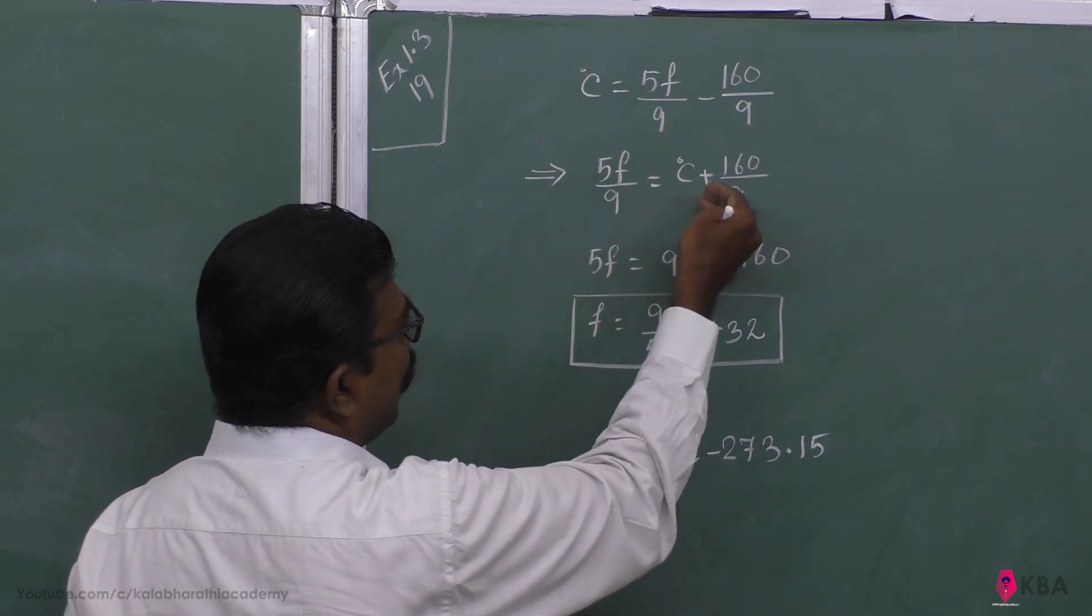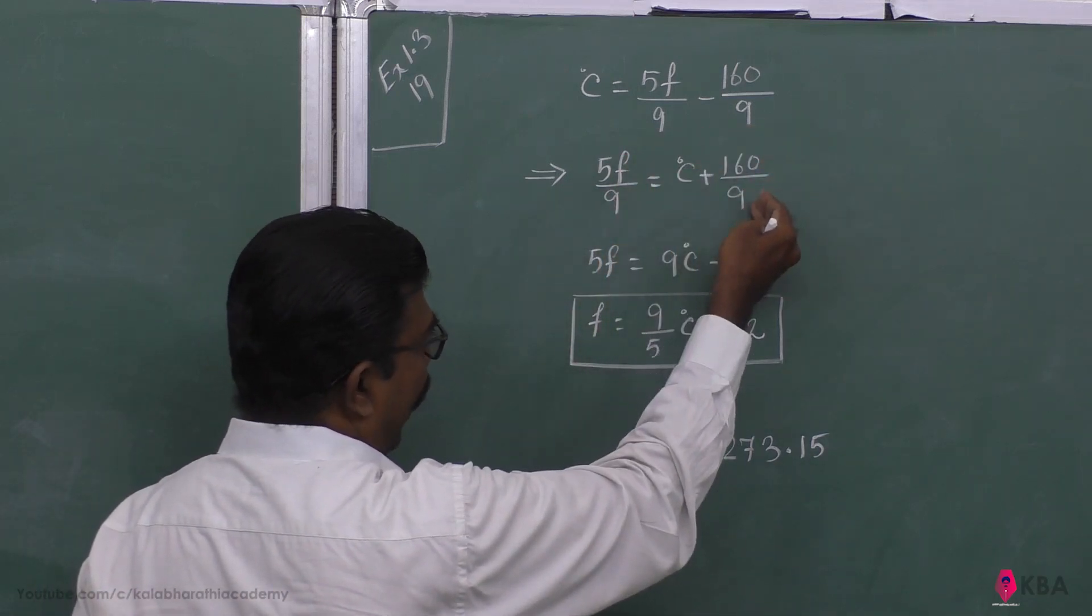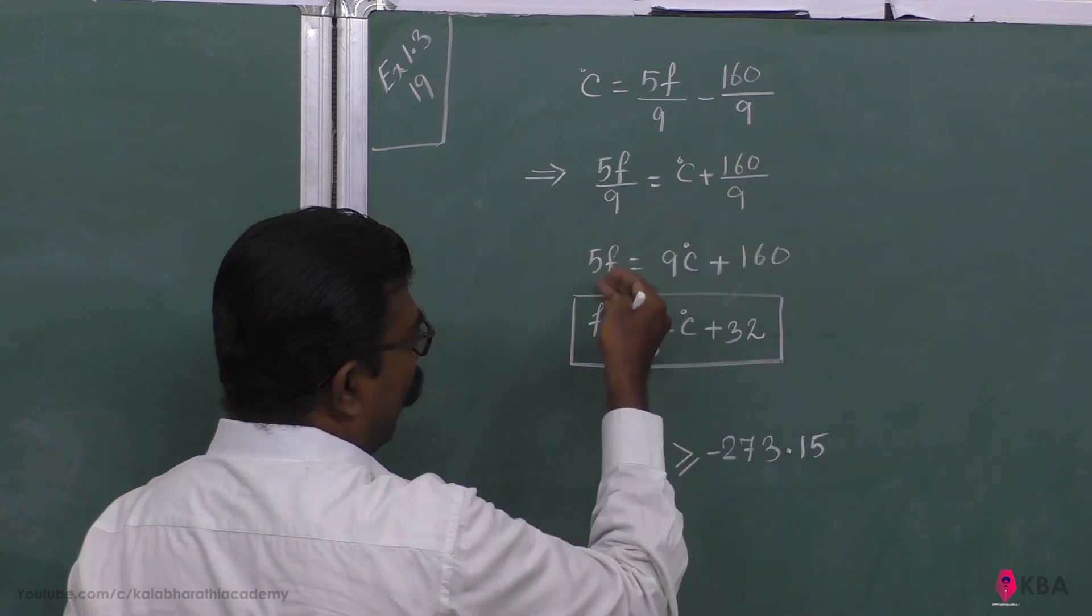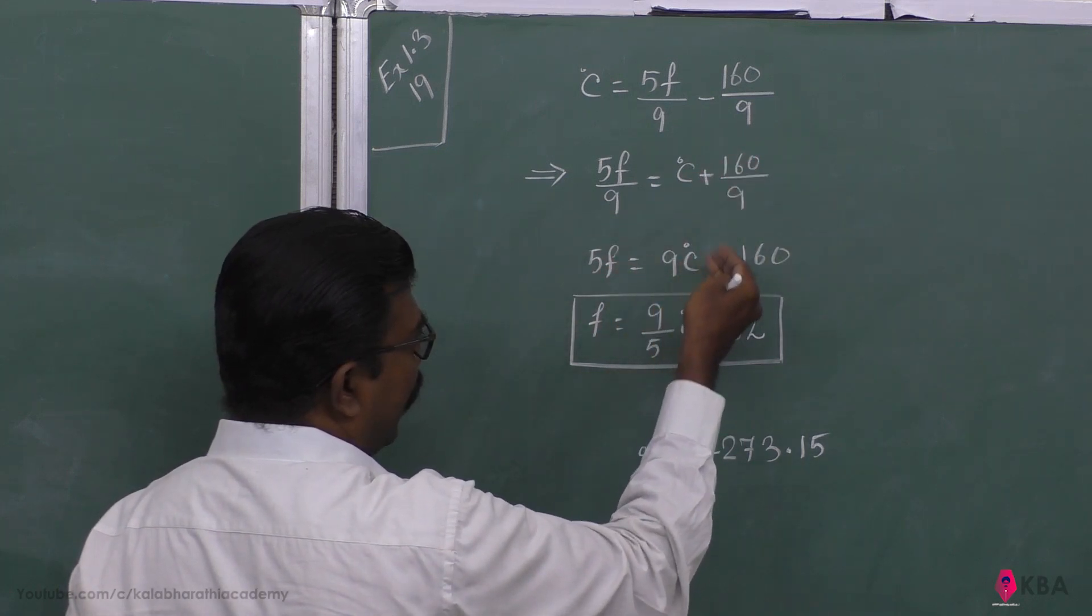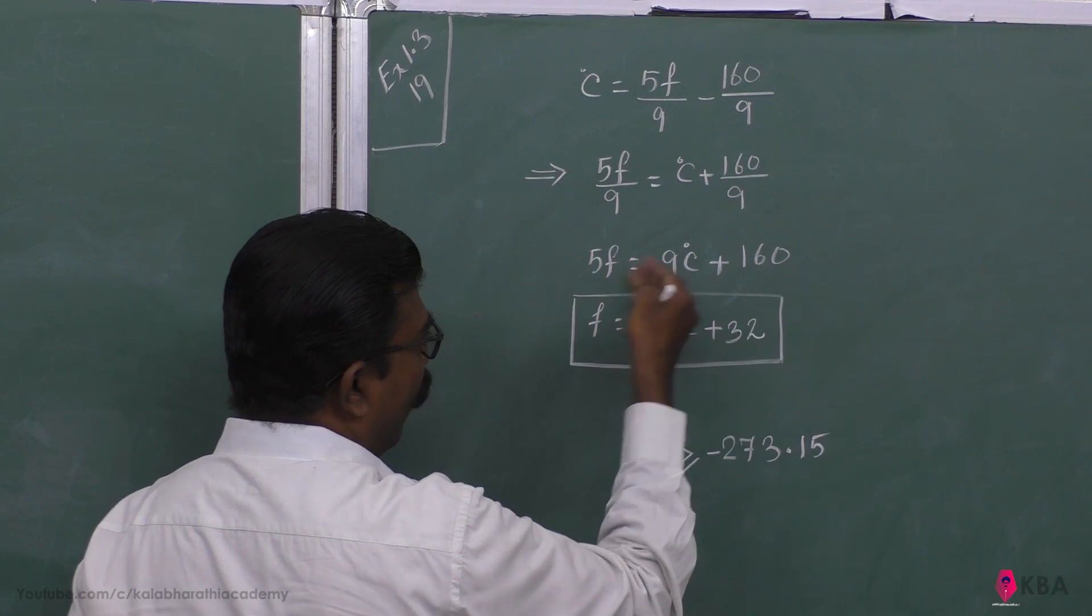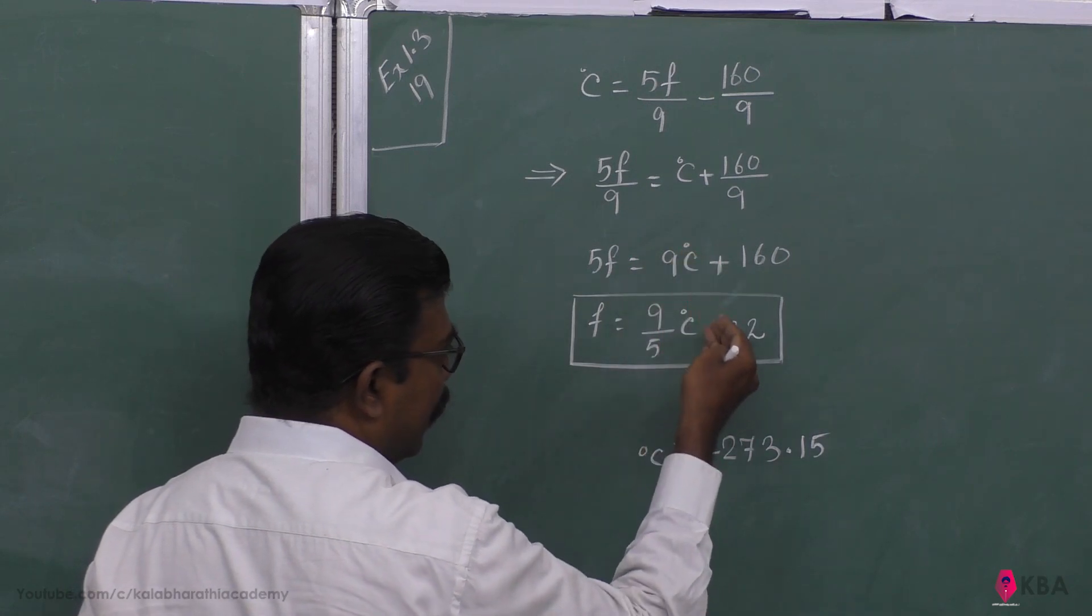5F by 9 is equal to C degree centigrade plus 160 by 9, just cross multiply. 5F is equal to 9 degree centigrade plus 160. F is equal to 9 by 5 degree centigrade plus 32.